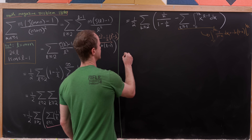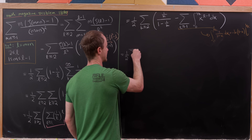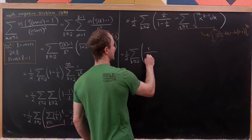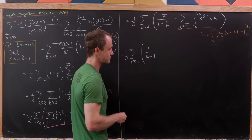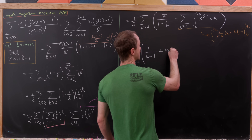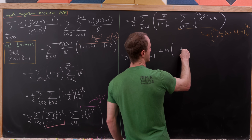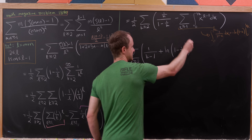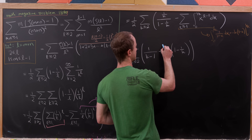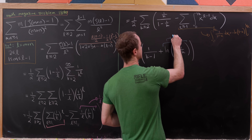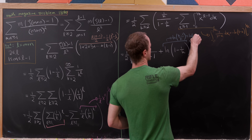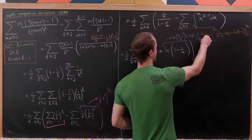Integrating 1 over 1 minus x gives minus the natural log of 1 minus x evaluated from 0 to 1 over k. So now we have one half times the sum as k is bigger than or equal to 2 of 1 over k minus 1, plus the natural log of 1 minus 1 over k. That logarithm simplifies to the natural log of k minus 1 over k, which by log rules equals natural log of k minus 1 minus natural log of k.